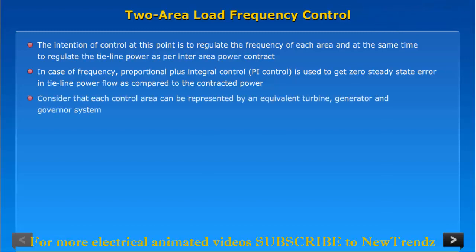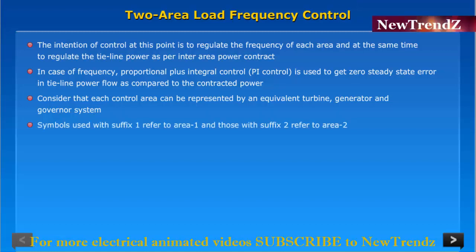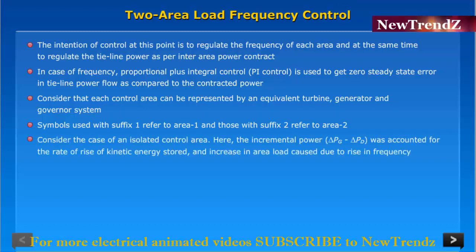Consider that each control area can be represented by an equivalent turbine, generator, and governor system. Symbols used with suffix 1 refer to area 1 and those with suffix 2 refer to area 2.